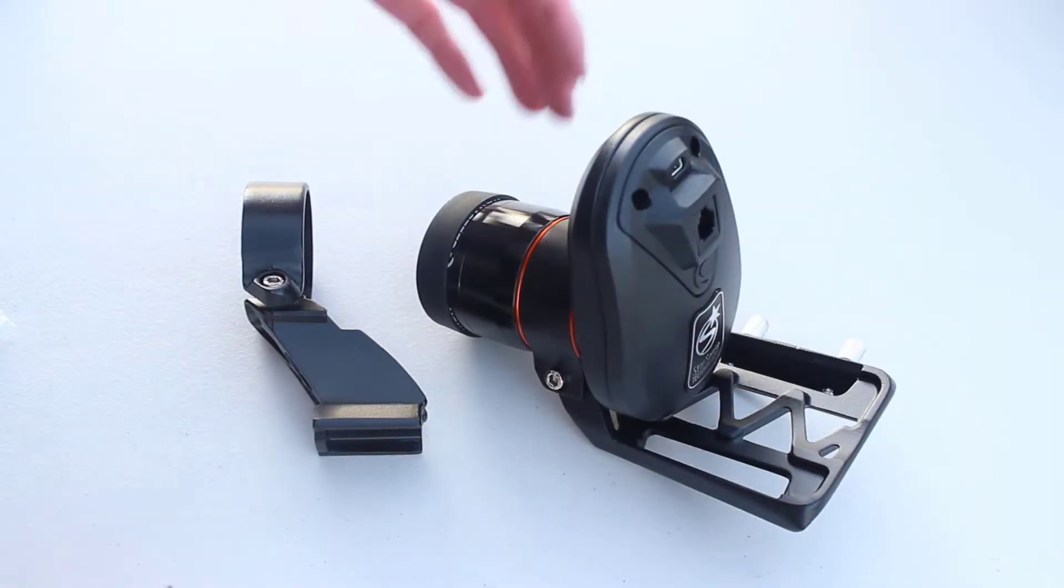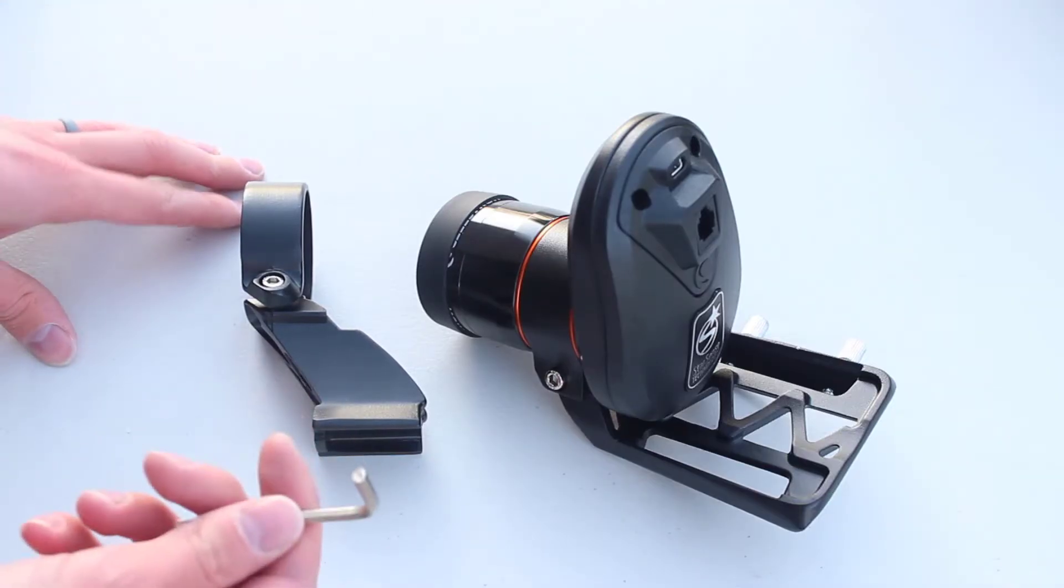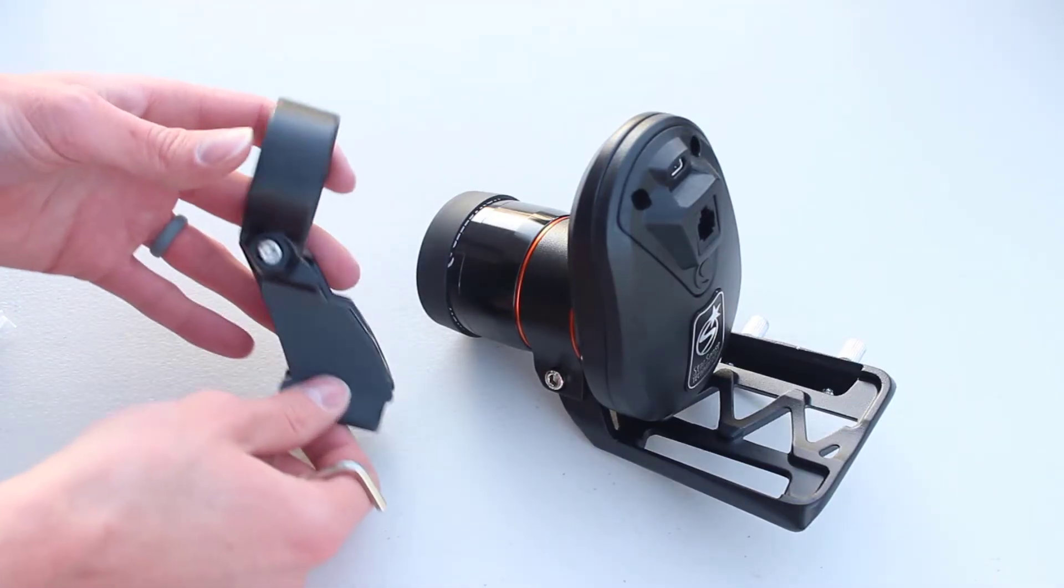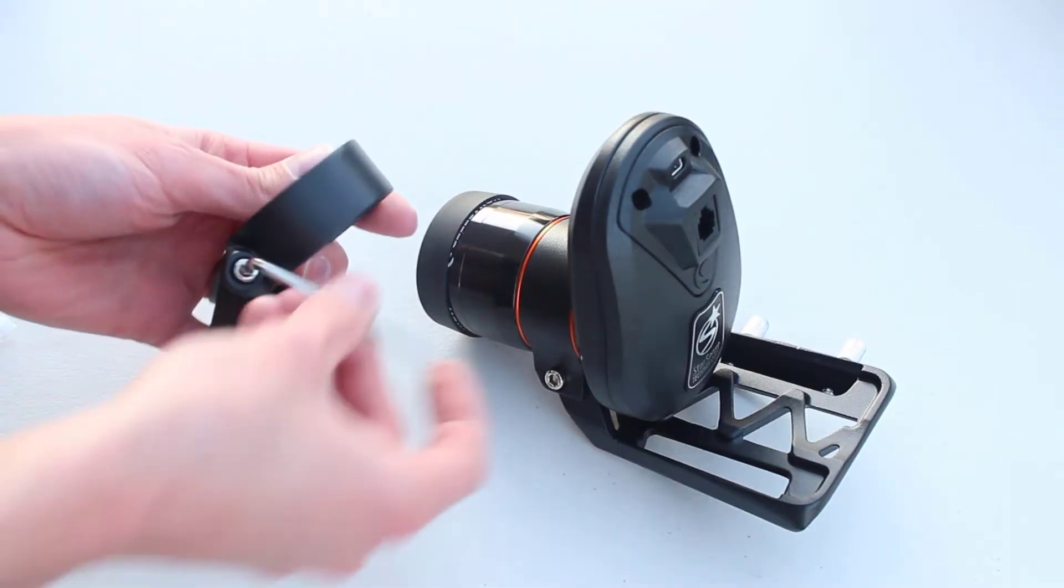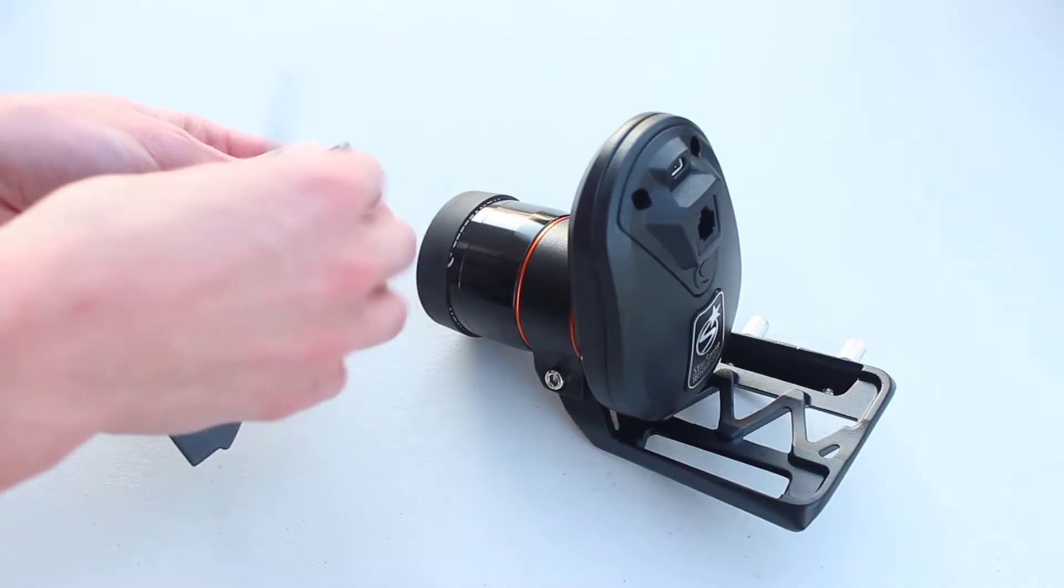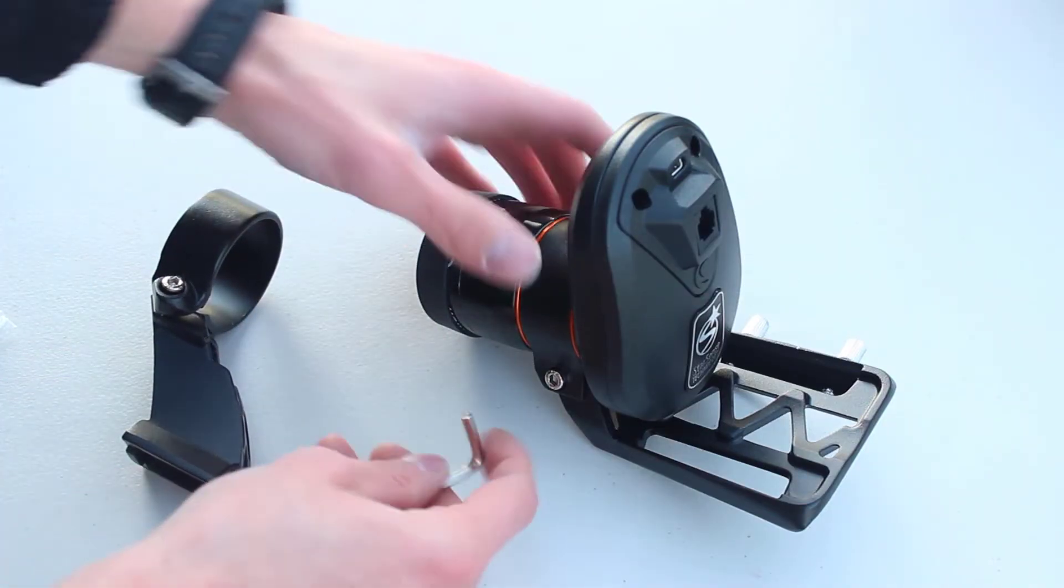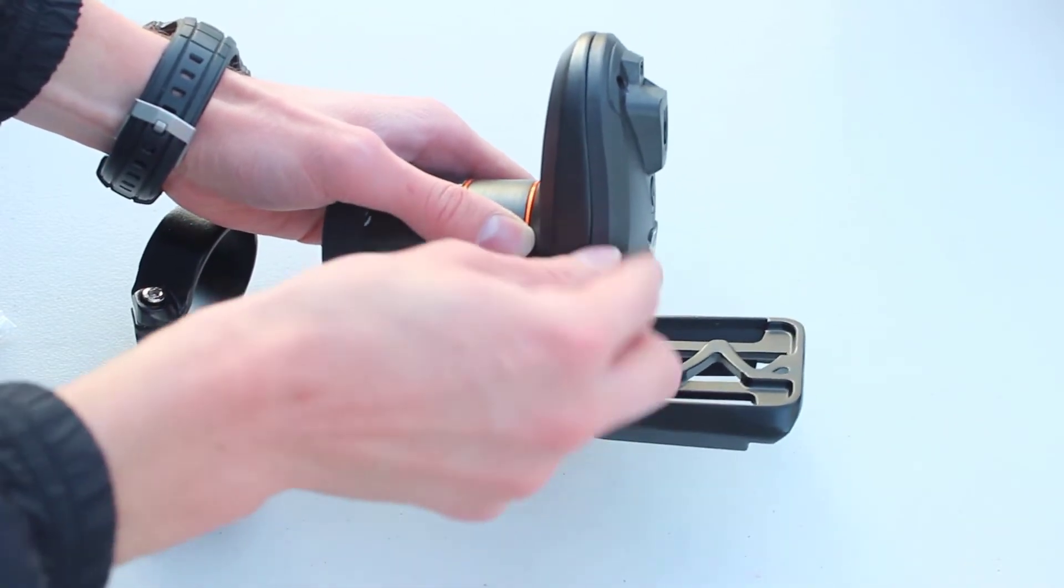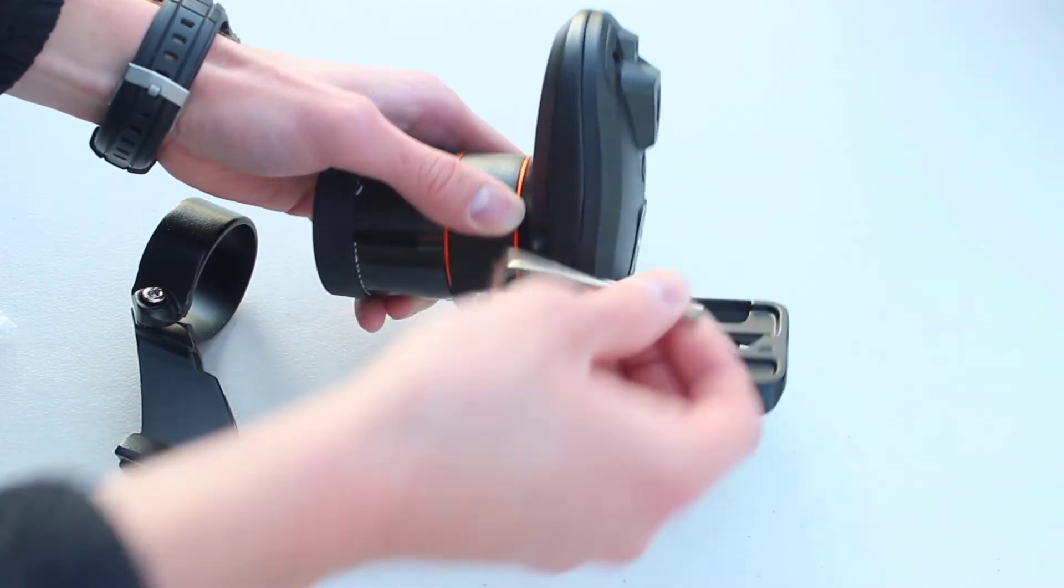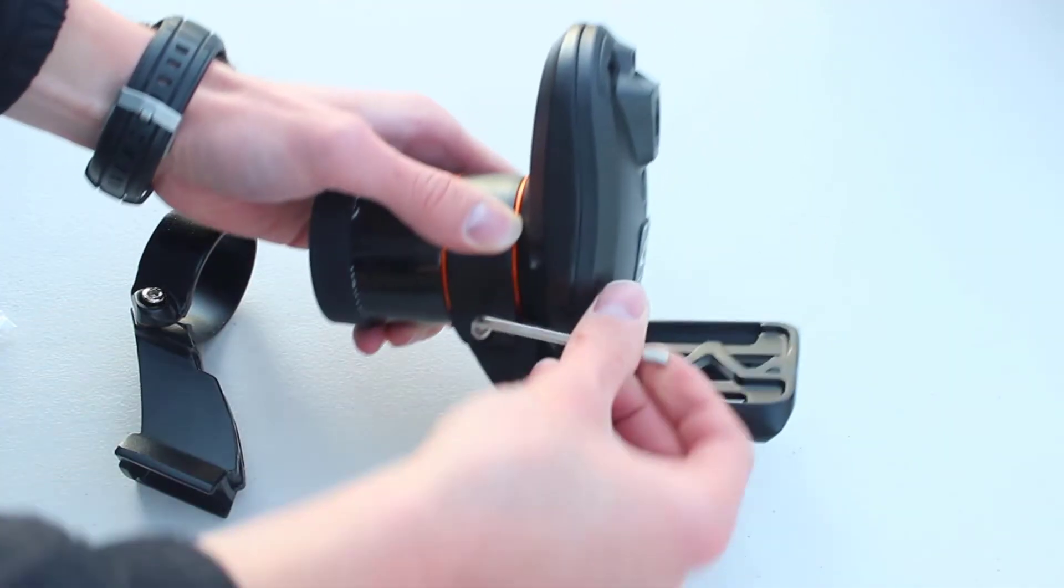Swapping the StarSense from the large bracket to the small bracket is really easy. Just take a four millimeter hex wrench and loosen the bolt in the small bracket a little bit so it's loose. And then do the same thing on the bracket that the StarSense is installed on. So this one's a little bit tighter. There we go.